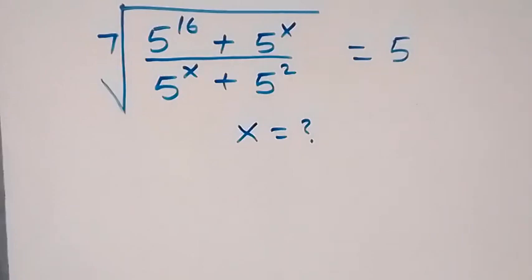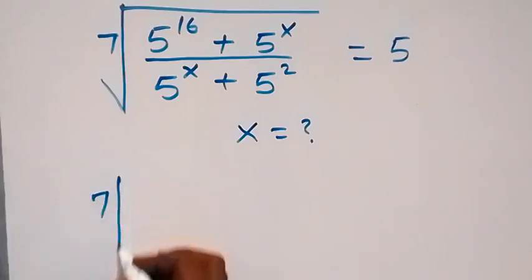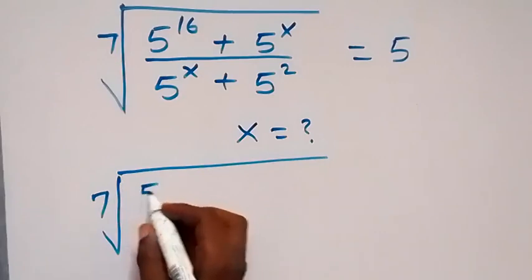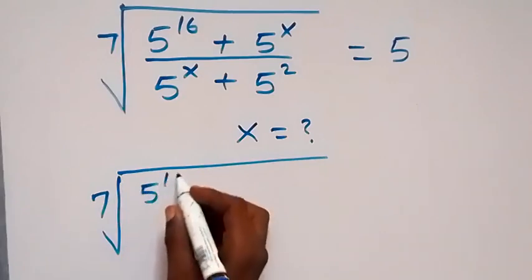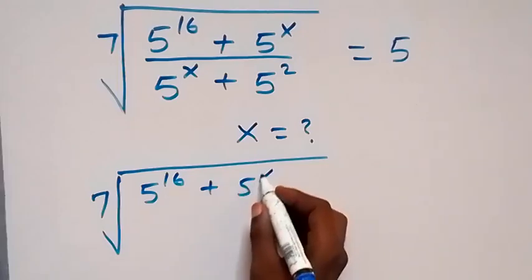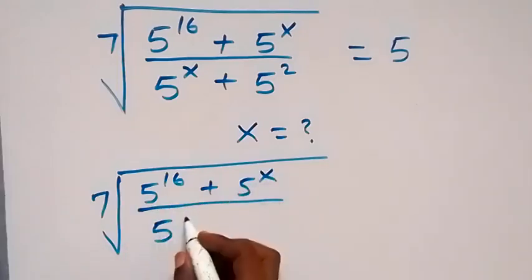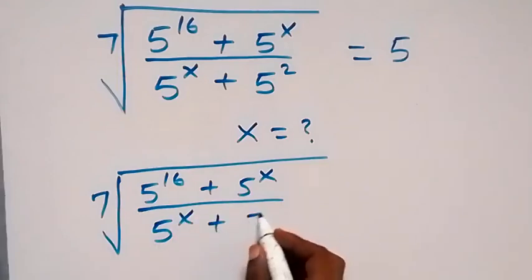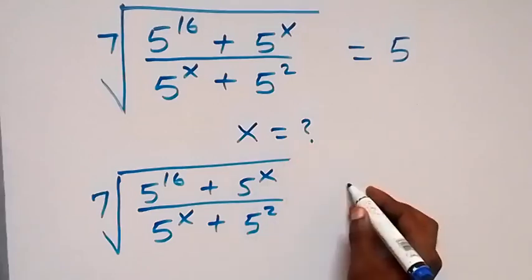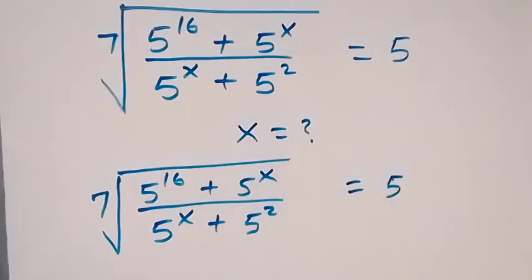From here, we have the 7th root of 5 raised to power 16 plus 5 raised to power x, divided by 5 raised to power x plus 5 raised to power 2, and that equals 5 on this side.